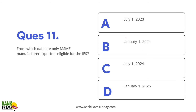From which date are only MSME manufacturer exporters eligible for the Interest Equalization Scheme? From 1st July 2024, only MSME manufacturer exporters are eligible for the Interest Equalization Scheme.